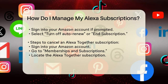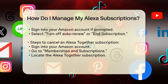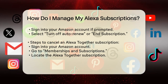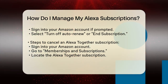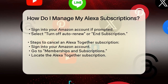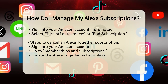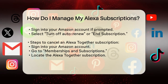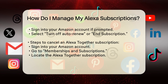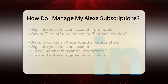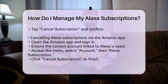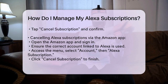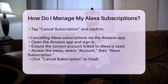If you have an Alexa Together subscription, here's how you can cancel it: Sign into your Amazon account, navigate to the Memberships and Subscriptions section, find the Alexa Together subscription from the list, tap on Cancel Subscription and confirm your cancellation.